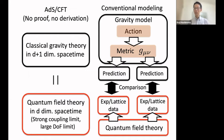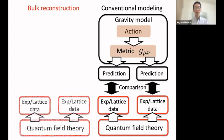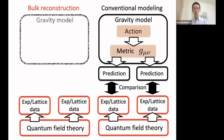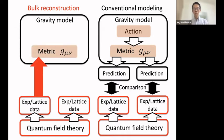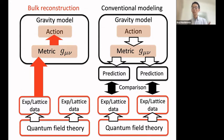The approach to overcome this difficulty is bulk reconstruction — a major stream in ADS-CFT. Starting from quantum field theory data, rather than guessing a model, one reconstructs the bulk geometry that reproduces the data. This is an inverse problem. If solved, one gets the metric function, which is a solution of some gravity model. Then solving backwards — given a solution, find the equation of motion — yields the action. With the action, one can compute all observables that holographic QCD researchers have explored.